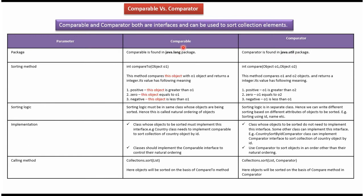Comparable interface sorting method is compareTo method. This compareTo method will compare this object with object1. If this object is greater than object1, it will return a positive integer. If this object is equal to object1, it will return 0. If this object is less than object1, it will return a negative integer.